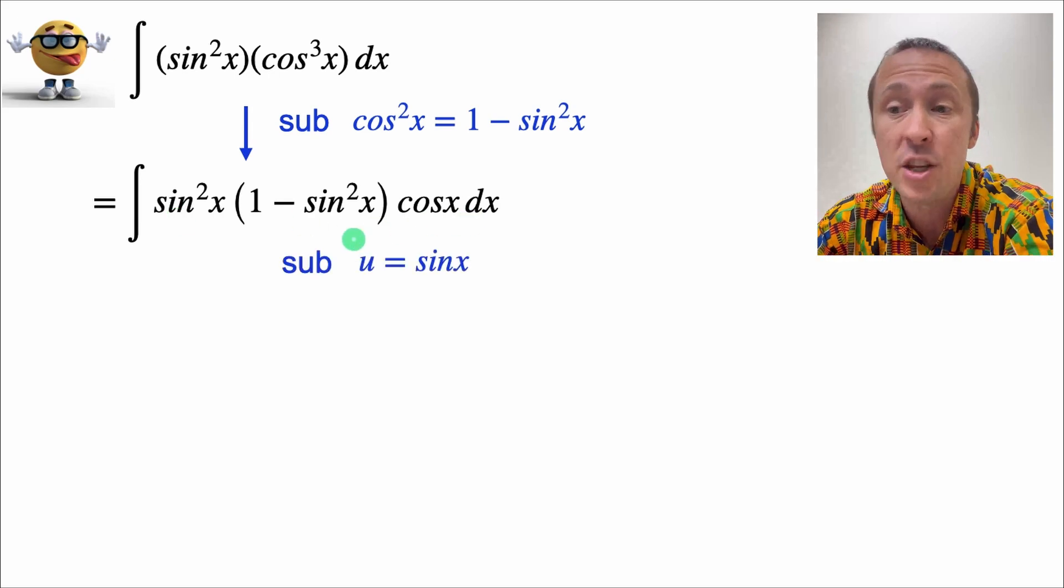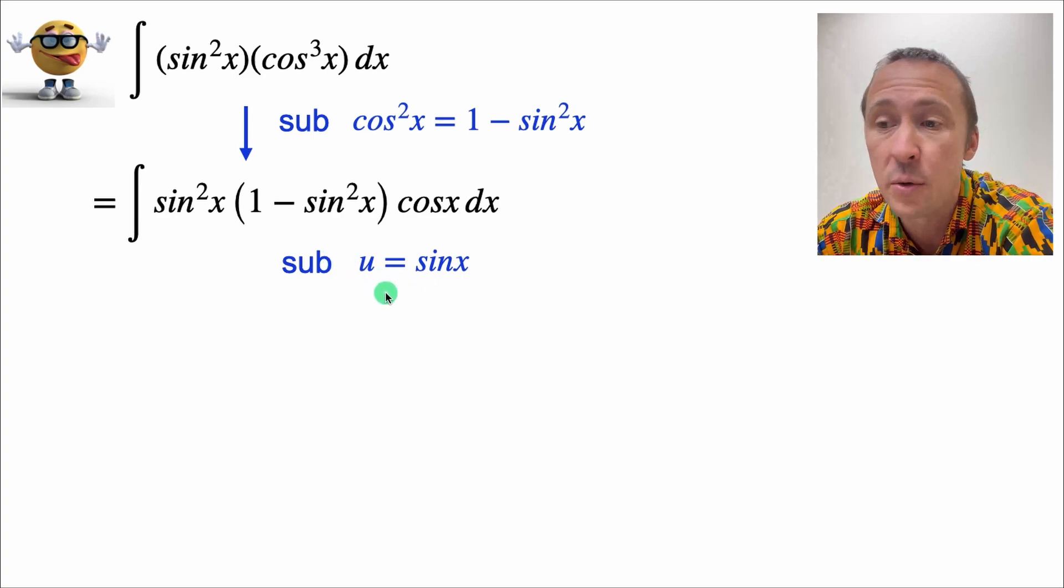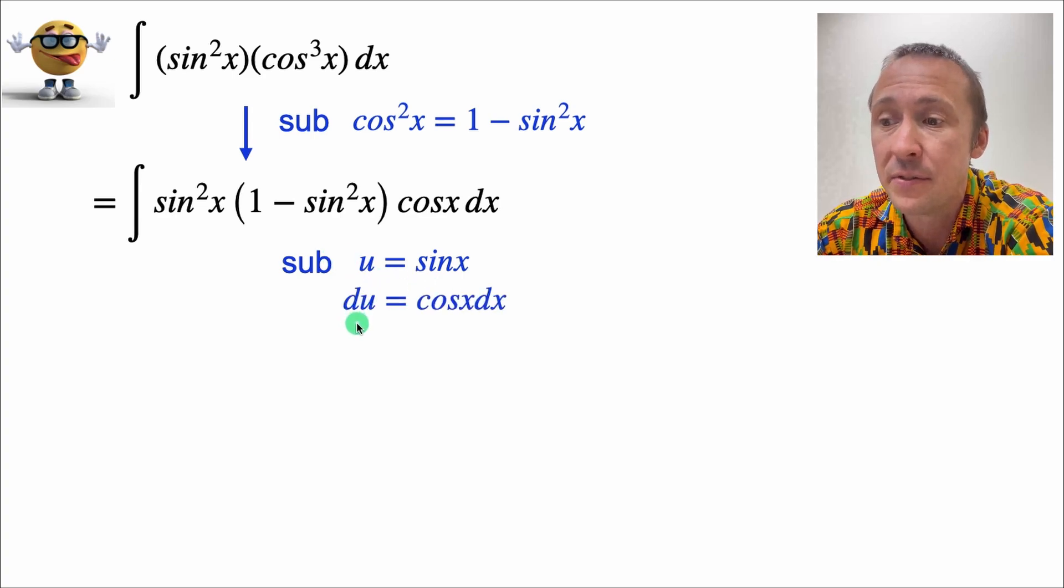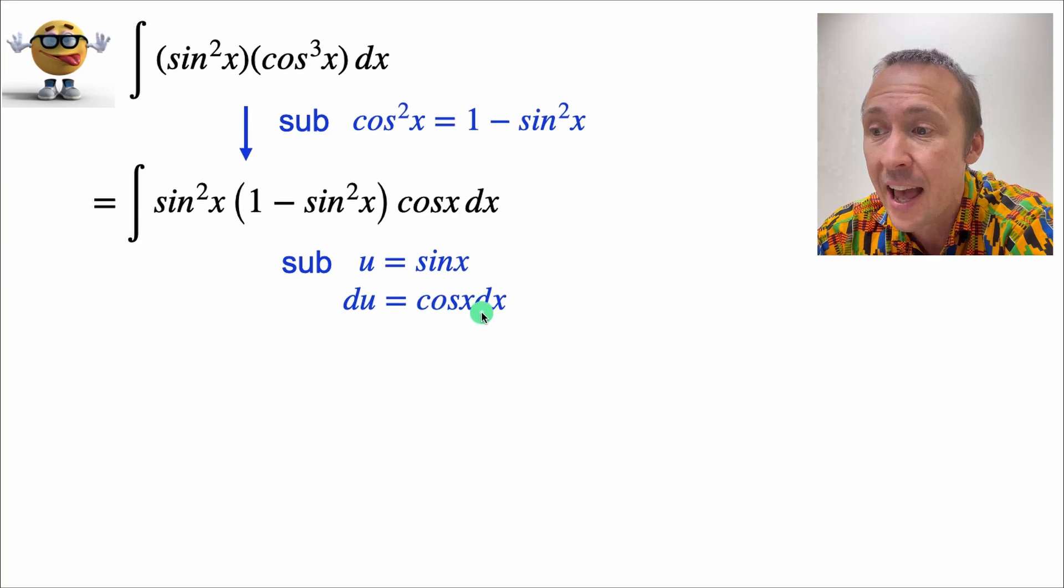So we can do a u-substitution. If u equals sin x, then the derivative du equals cos x dx. So this cos x dx is right here.